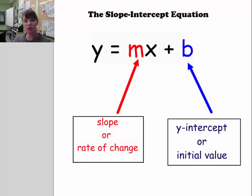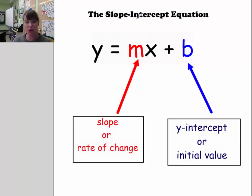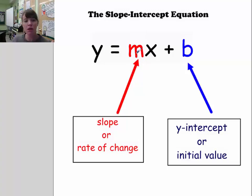The slope-intercept form of an equation is an equation that's written so that it's solved for y. Y is often on the left-hand side, but it could also be on the right-hand side, because the symmetric property says that you can flip things around the equal sign. So it's solved for y, and on the other side you have the term with x, which has a coefficient, and then you have the constant term at the back of the equation.